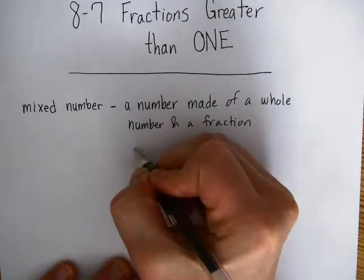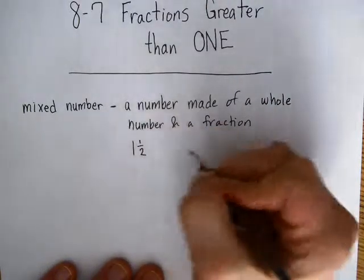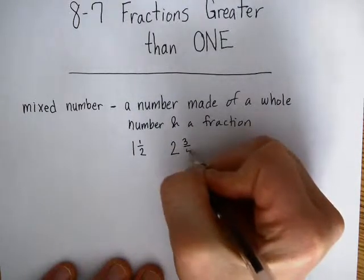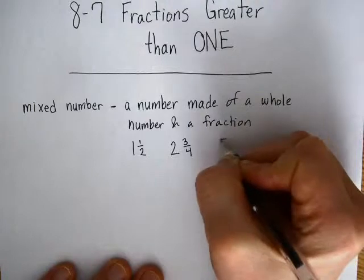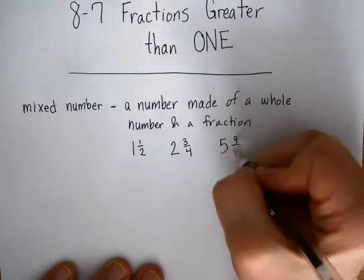For example, a mixed number could be something like 1 and 1 half, or it could be 2 and 3 fourths, or 5 and 9 twelfths.